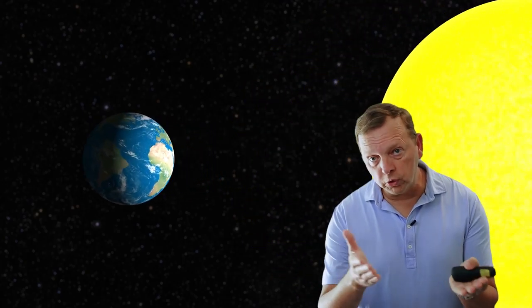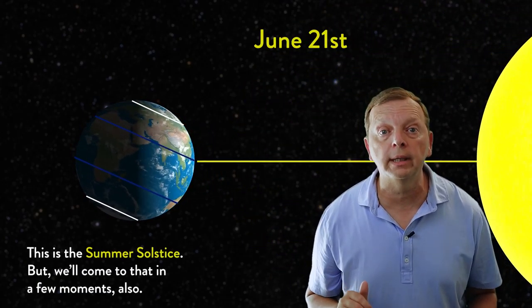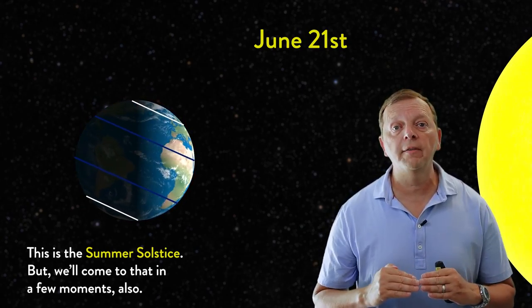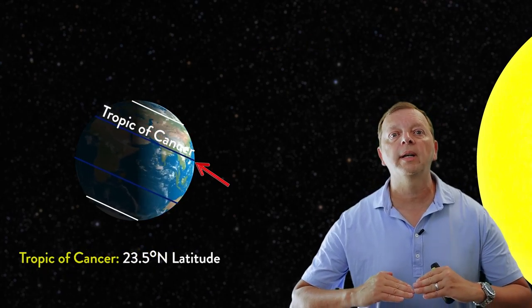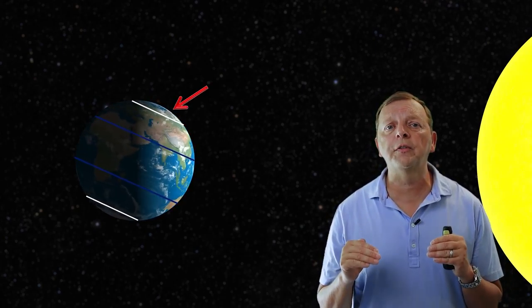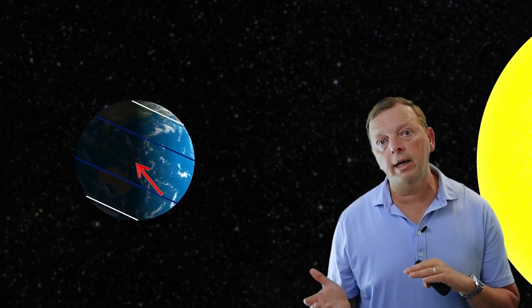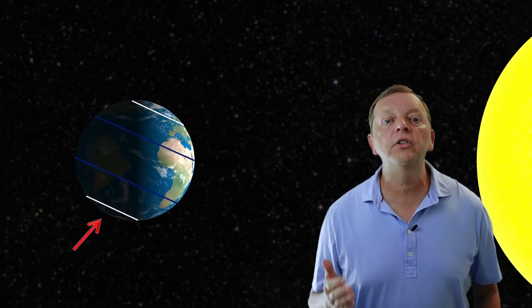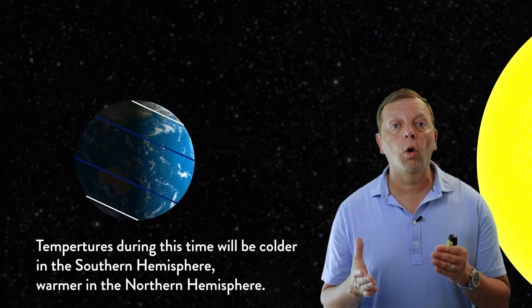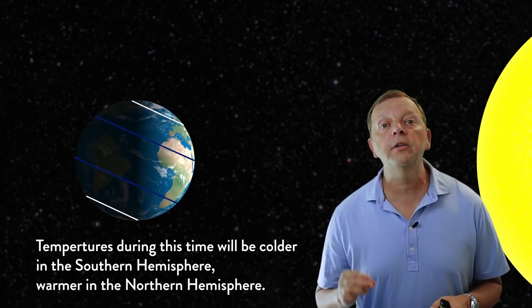But remember, the Earth continues to revolve around the Sun, so six months later, which would be June 21st, the situation has completely changed. Instead of the center of the Sun's energy being on the Tropic of Capricorn at 23.5 degrees south latitude, we now see that it's at 23.5 degrees north latitude, or what is known as the Tropic of Cancer. Also, if you look at the area above the Arctic Circle now, in the Northern Hemisphere, the Sun is actually never setting. And between the Antarctic Circle and the South Pole, the Sun now never rises on this day. During this period of time, the temperatures in the Northern Hemisphere will be warmer than in the Southern Hemisphere because the focus of the Sun's energy is in the Northern Hemisphere on the Tropic of Cancer.